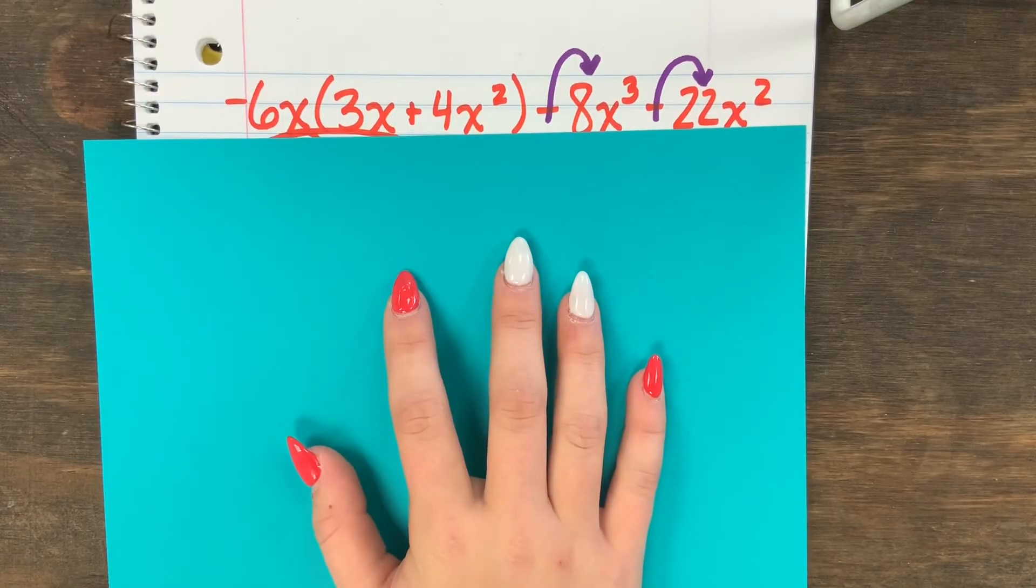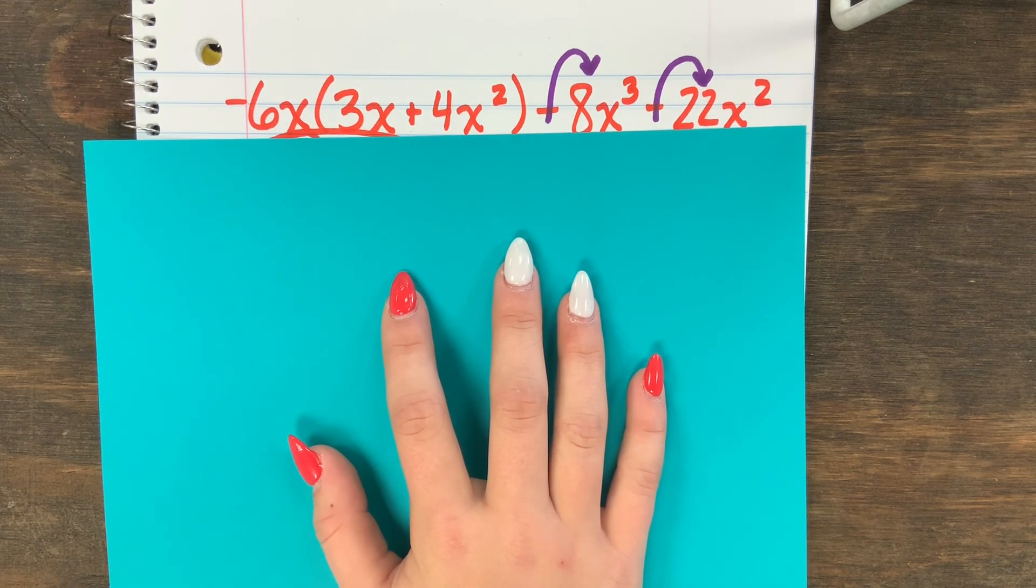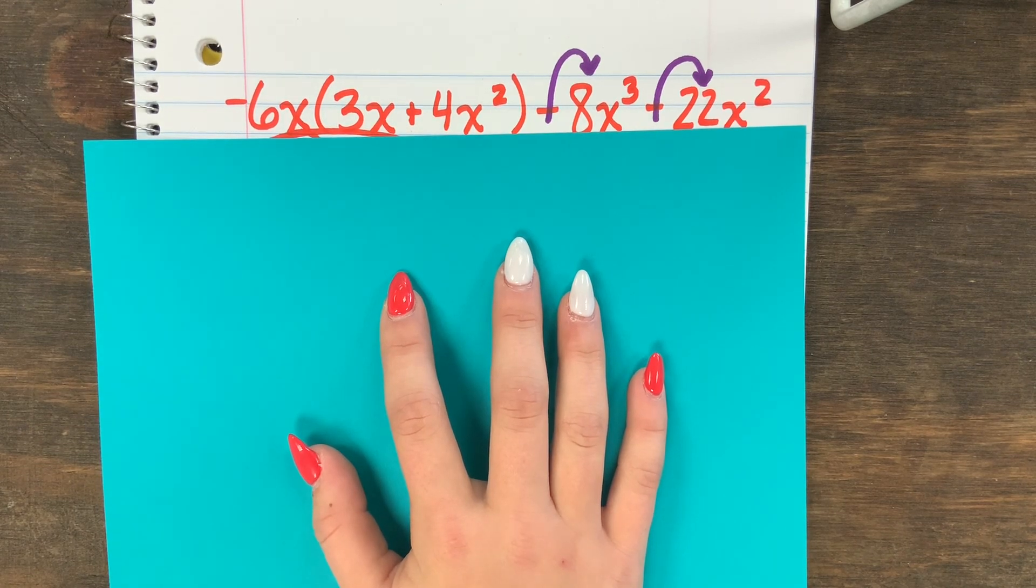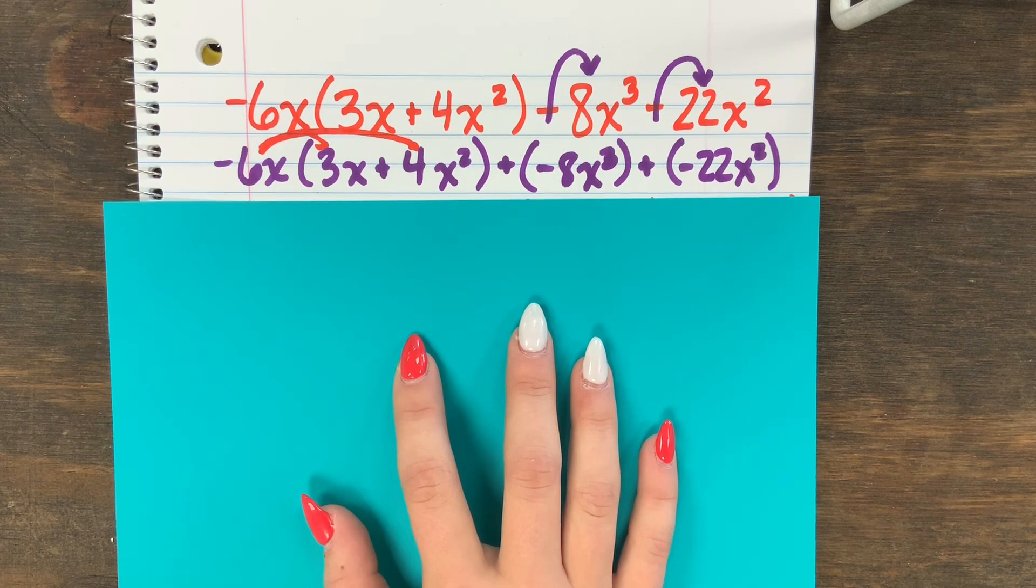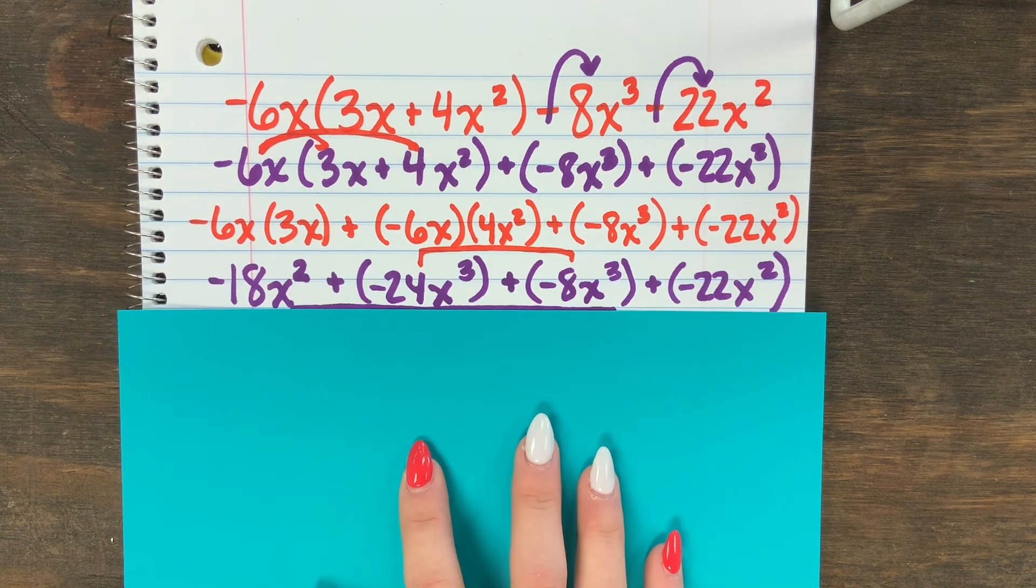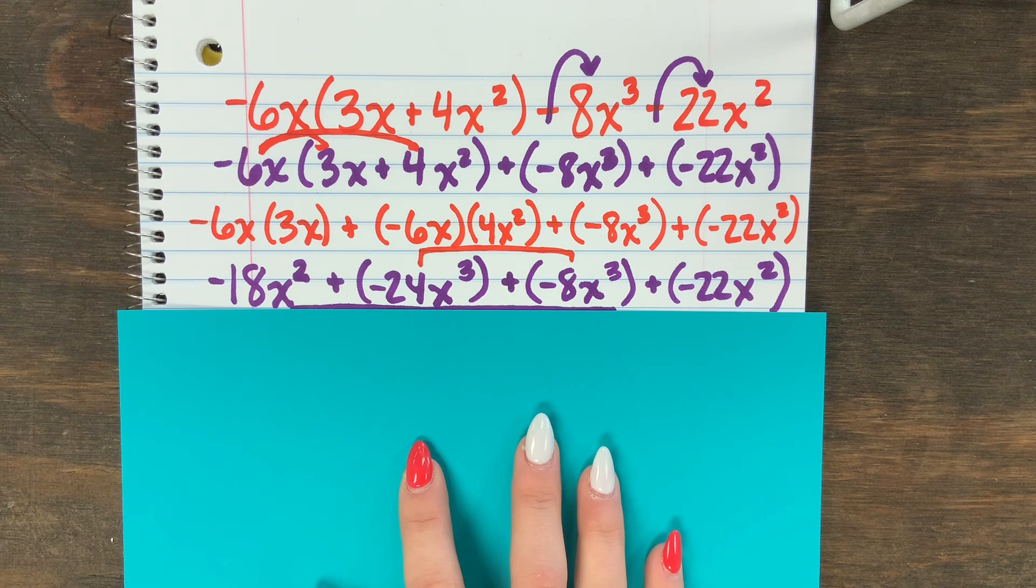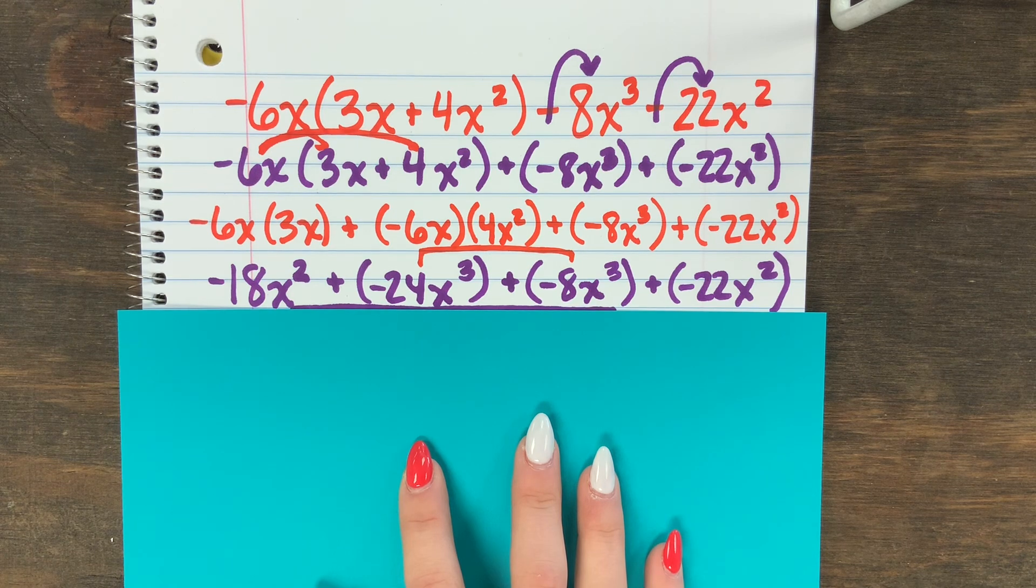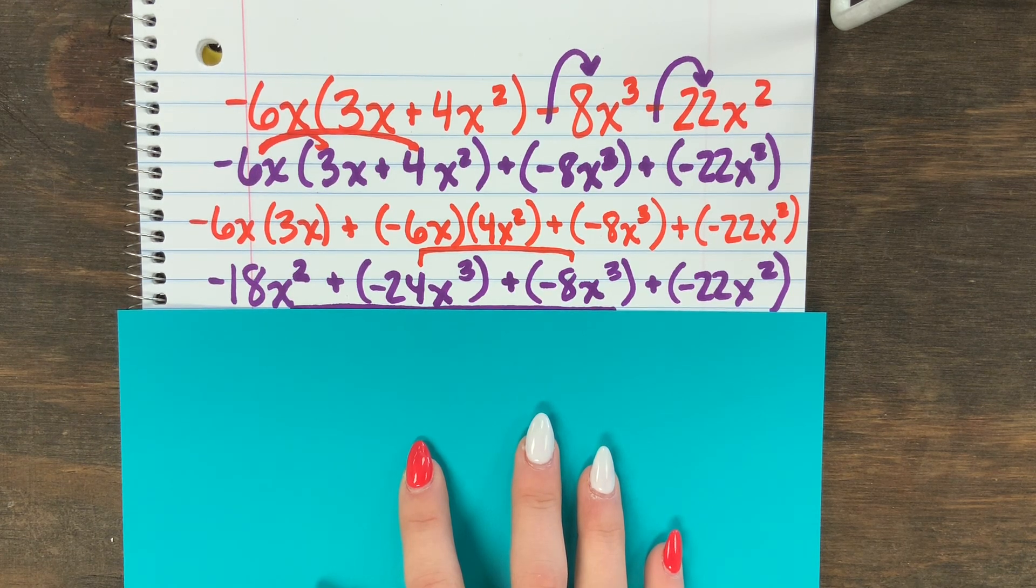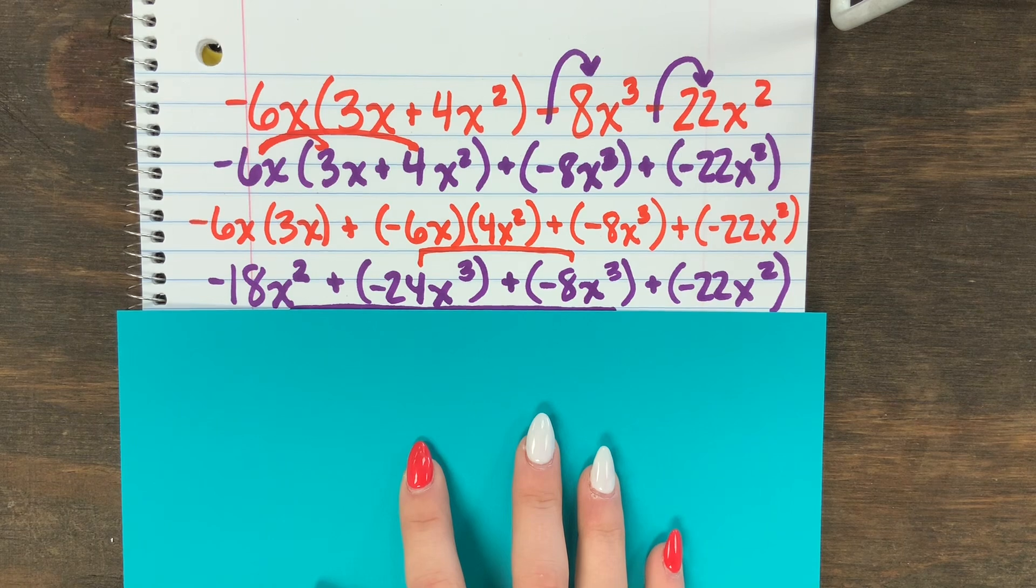All right, our problem is negative 6x times 3x plus 4x² minus 8x³ minus 22x². So we're going to add the opposite to the 8x³ and 22x², and then we get plus the opposite of 8x³ and plus the opposite of 22x², and then we bring everything else down. Negative 6x times negative 6x times 4x² is negative 24x³, and we brought everything else down.